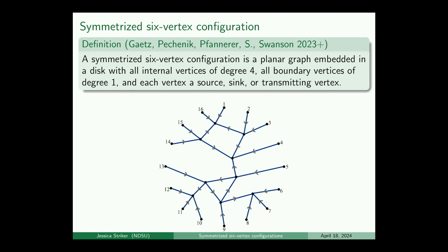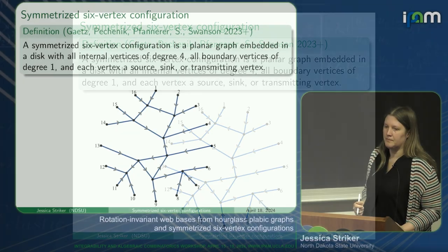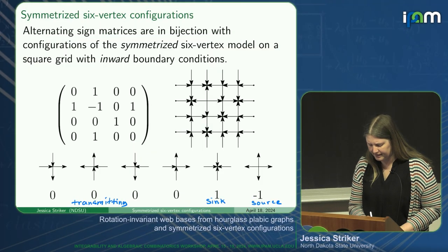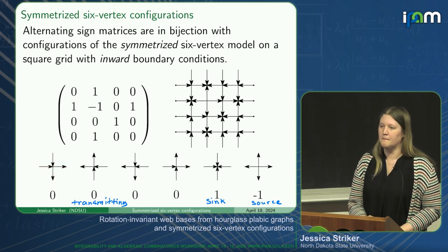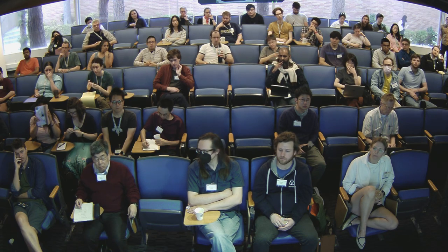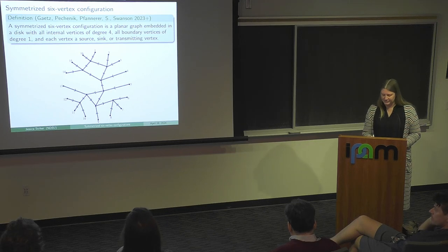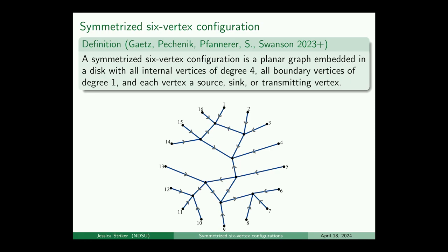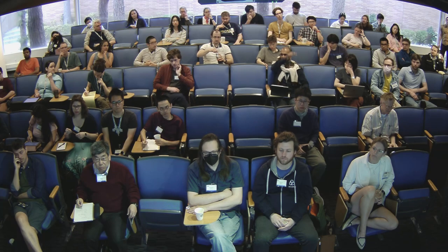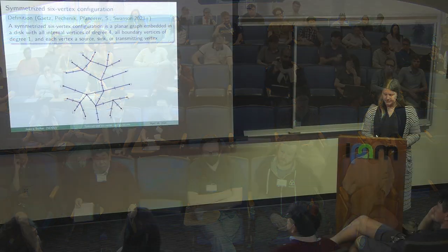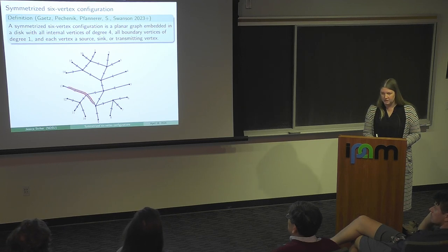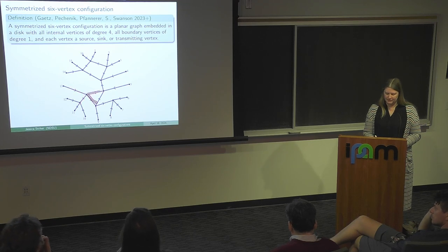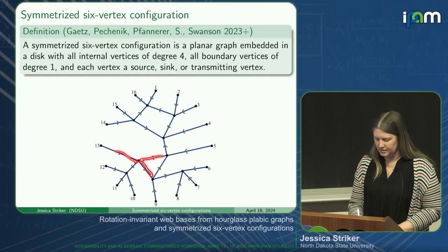A symmetrized six-vertex configuration is a planar graph embedded in a disk with all internal vertices of degree four, all boundary vertices of degree one, and each internal vertex is a source, a sink, or a transmitting vertex. A transmitting vertex is one where arrows just transmit through—on a general graph there's no horizontal or vertical, so all four transmitting configurations are essentially the same. You can see here's a sink, and here's a transmitting vertex where the arrows are just going straight through. Anything that's not a source or sink has the property that an incoming edge exits straight across, so: in, in, out, out.